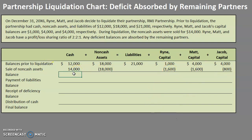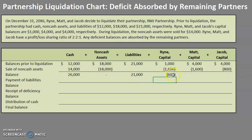The next line is simply adding up all of the balances. Our cash now has a new balance of $26,000. Non-cash assets has a balance of zero. We made no changes to our liabilities, so they are still at $21,000. Ryan's capital is now $1,000 minus $1,600, giving him a negative balance — that's the deficit we keep talking about. Matt had $4,000 minus $1,600, so he has $2,400. Jacob has $4,000 minus $800, leaving him with $3,200.